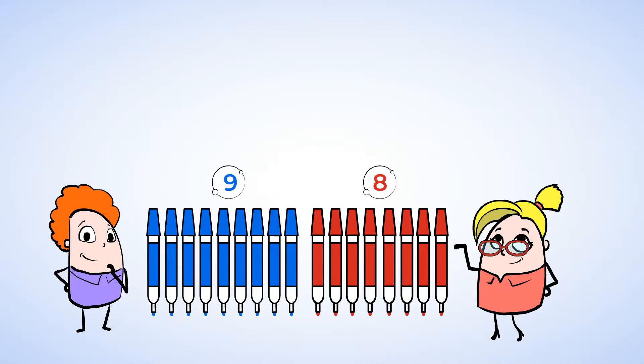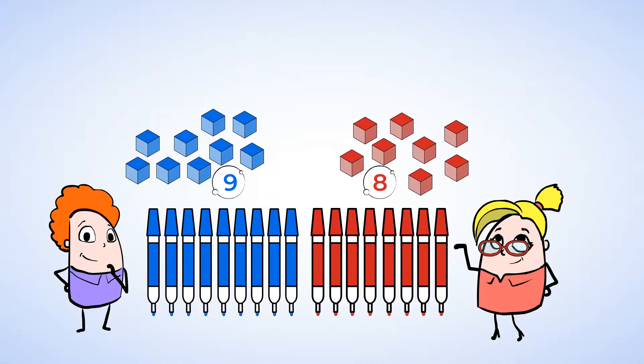We can use something to represent the markers. Look, we can use linking cubes. You can put these cubes together and take them apart to make different numbers. Let's make the number nine first. One, two, three, four, five, six, seven, eight, nine.